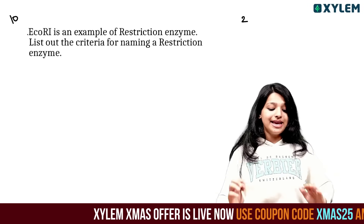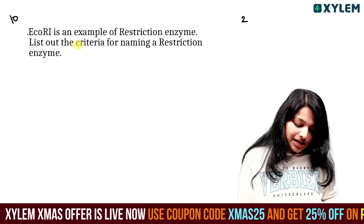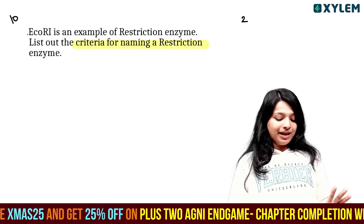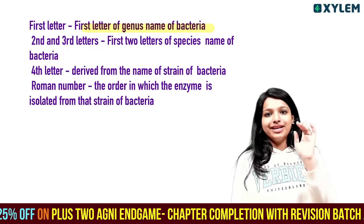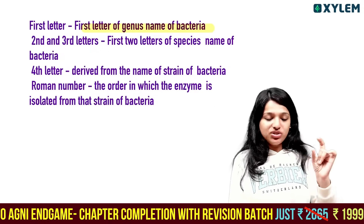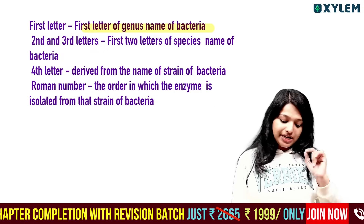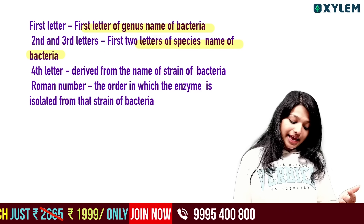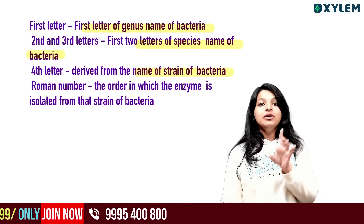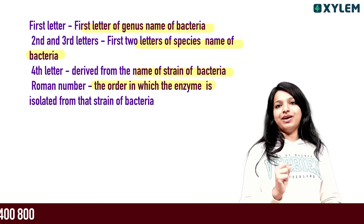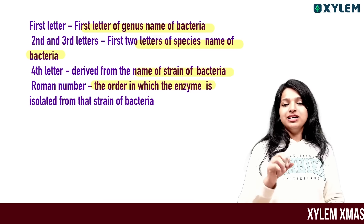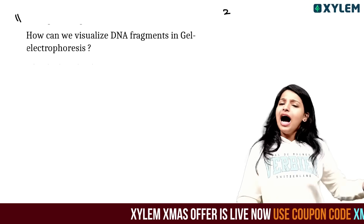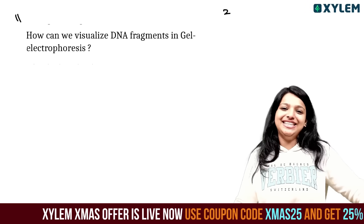The finished product must undergo clinical trials, as in the case of drugs, and strict quality control testing for each product. This is the downstream process. ECO-R1 is an example of a restriction enzyme. The criteria for naming a restriction enzyme: first letter from genus and the bacterium's genus, second and third letters from species, fourth letter indicates any strain, and a Roman numeral for the order of enzyme isolation.